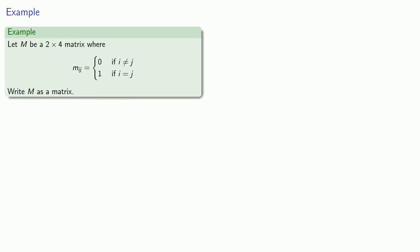Typically, we use the index notation to describe a matrix, so for example, let M be a 2 by 4 matrix whose entries are either 0 if i is not equal to j, or 1 if i is equal to j.